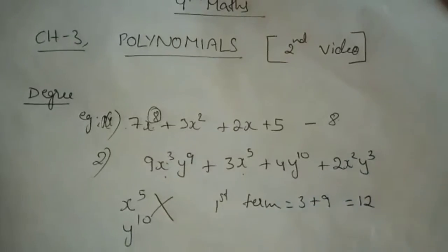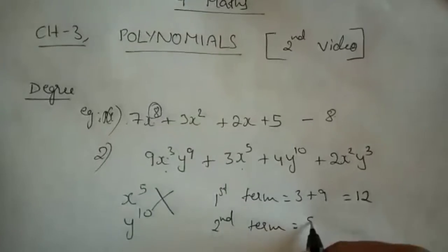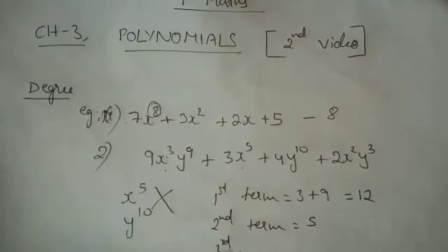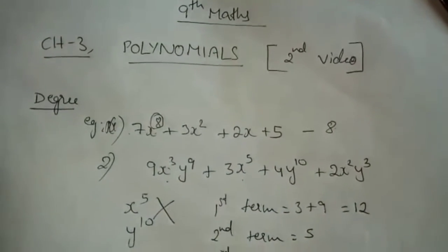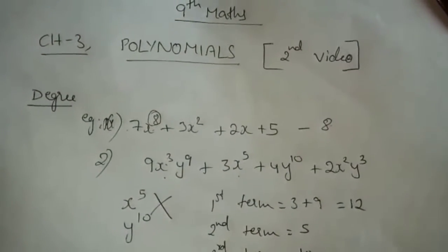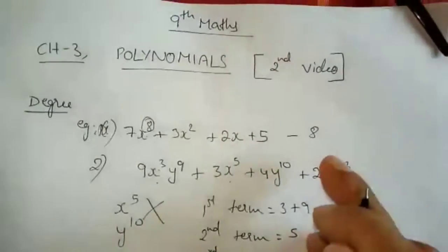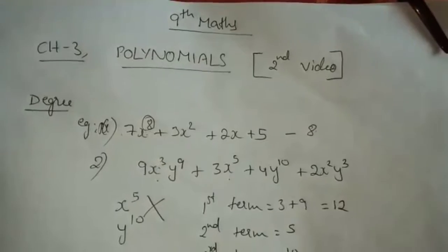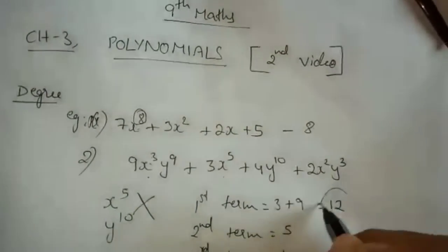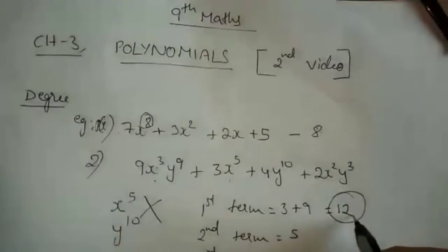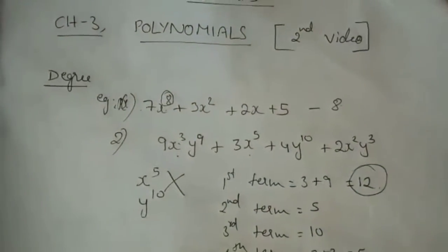So the first term gives 12. In the second term, the power is 5. In the third term, the power is 10. In the fourth term, there are two variables again, so you add their powers: 2 plus 3 equals 5. Now you have to see which is highest among all terms — and 12 is the highest.